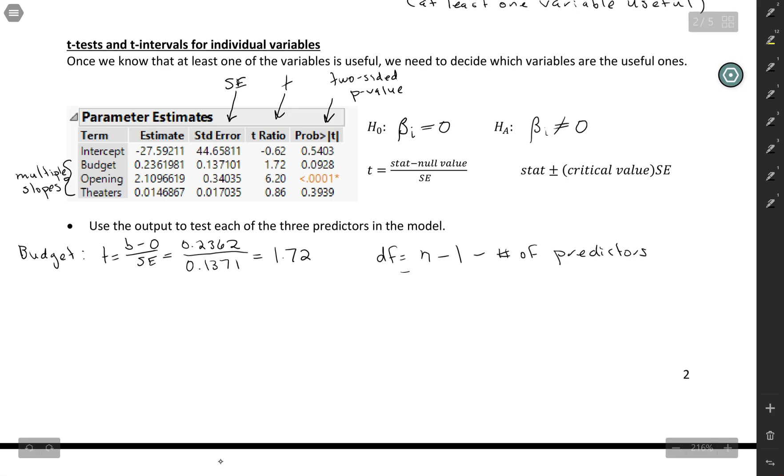So you could have more than one slope here. Like in this example, we have a sample size of 43 minus 1 for the intercept, minus 3, because we have budget, opening, and theaters, those are our three predictors, is 39 degrees of freedom.